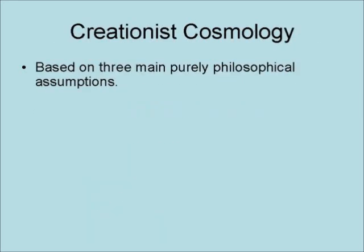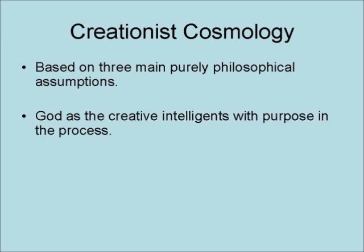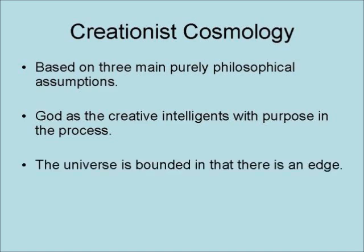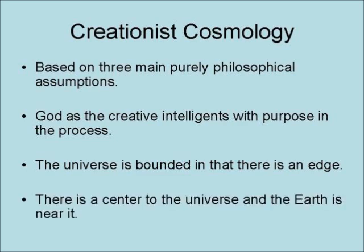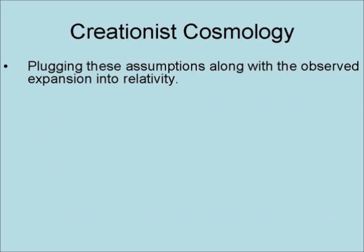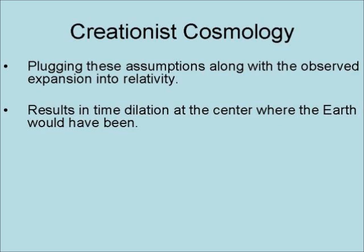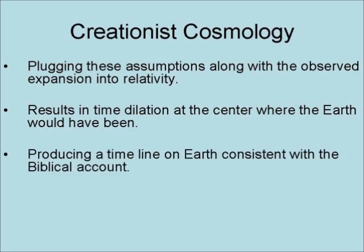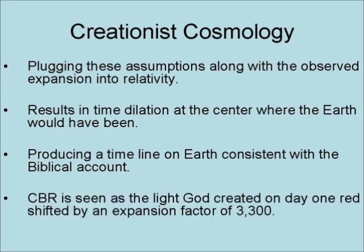The electric universe is not yet fully developed. Creationist cosmologies tend to also be based on three main philosophical assumptions: God has creative intelligence with purpose in the process; the universe is bounded, meaning there is an edge beyond which there is no matter; and there is a center to the universe, and the Earth is near it. This is not geocentric, because the universe does not rotate around the Earth. Plugging these assumptions along with the observed expansion into relativity results in time dilation at the center where the Earth would have been, producing a timeline on Earth consistent with the biblical account. The cosmic background radiation is seen as the light that God created on day one of creation, redshifted by an expansion factor of 3,300.